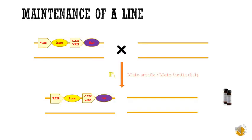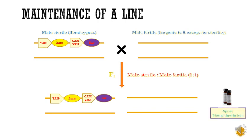For maintenance of the A line, we use the A line and the B line. This B line is isogenic to the A line except for the fertility or sterility gene and resistance to herbicide. When A line and B line are crossed, F1 segregates in the ratio 1:1. The A line consists of the Barnase gene linked with the Bar gene, and the expression of these genes is facilitated by a constitutive promoter. Two genetically different types of seeds on the flowers of male sterile plants are obtained from the segregants. The male sterile line can be maintained by spraying the herbicide, which kills all the male fertile plants.